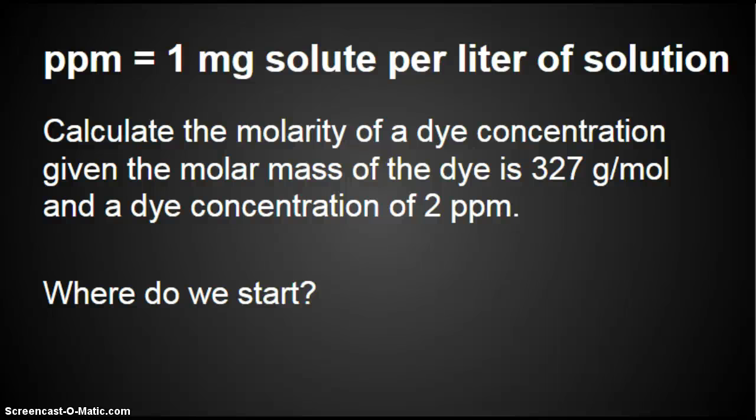This is part 2 of the parts per million tutorial. We're going to calculate the molarity of a dye concentration given the molar mass of the dye is 327 grams per mole and a dye concentration of 2 parts per million.